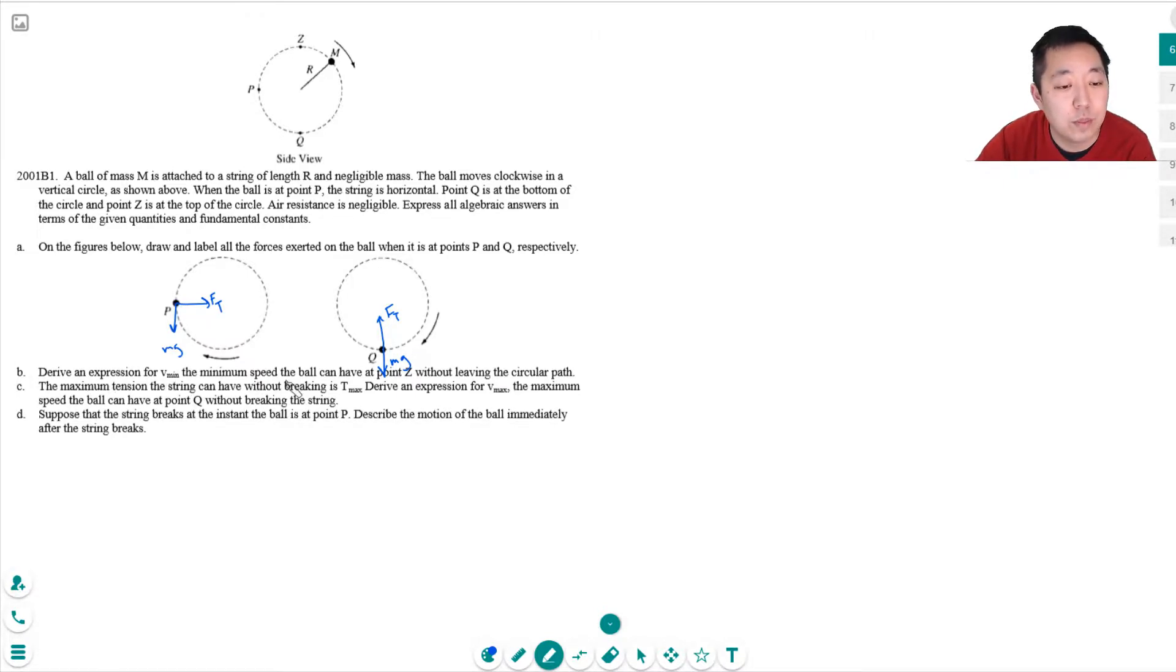Derive an expression for V min, the minimum speed the ball can have at point Z without leaving the circular path. So at point Z we have two forces. So this is point Z. I have MG down and I also have tension down. What happens is as I slow down the net force is equal to FT plus MG and that's equal to MV squared over R. Right? Well because this is equal to MA.